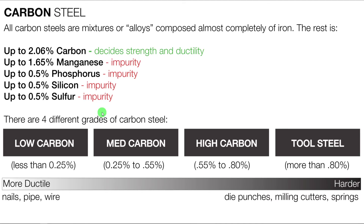Manganese, phosphorus, silicon, and sulfur are all impurities, and they change the ability for the material to be machined. The amount of carbon is what they use to decide the strength of the material. Hopefully this acts as a primer to carbon steel and the different properties of it. Thank you.